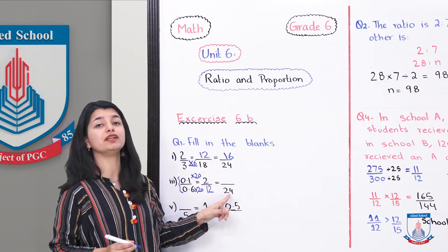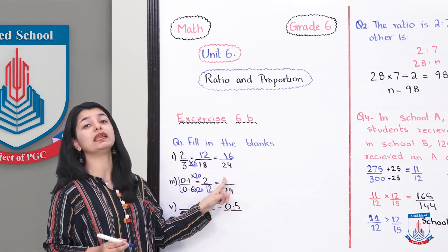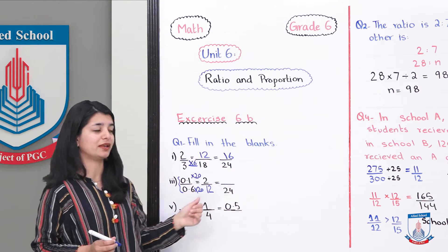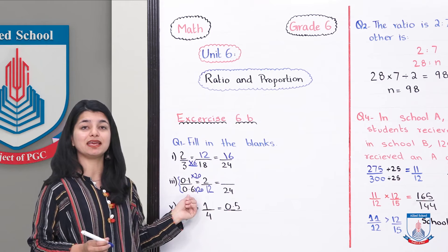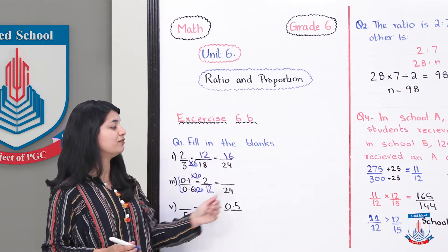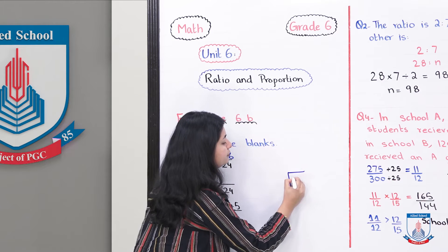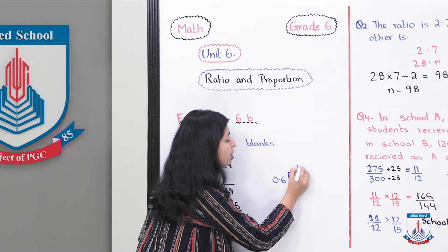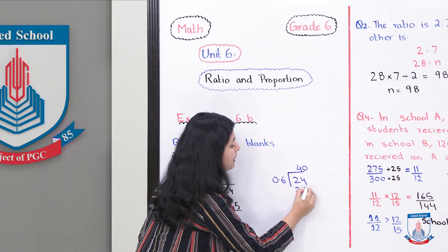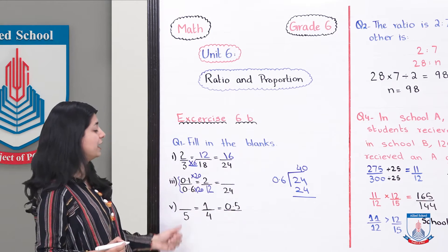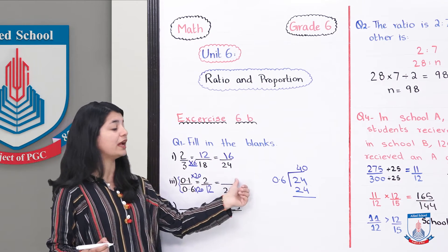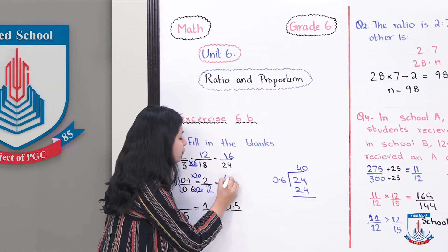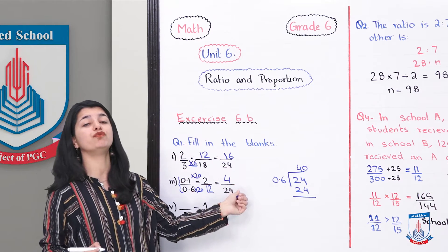In the next part, they've given you the denominator 24. You have to find out the numerator. For that, find the relationship with the denominator. When you divide 24 by 0.6, once you solve it out, you will realize that the answer you get is 40. So 0.6 multiply by 40 is 24. That means we have to multiply 0.1 by 40 to get the answer. When you multiply 0.1 by 40, you will get 4. Your fraction becomes 4 by 24.